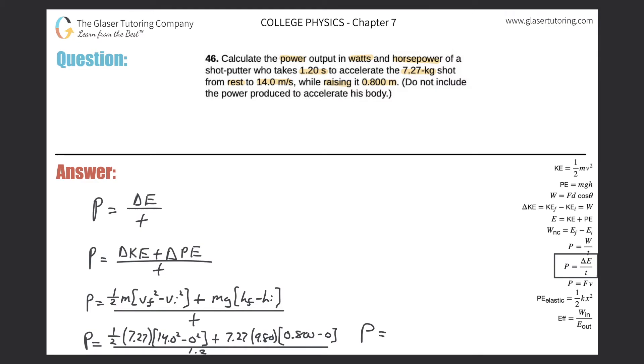0.5 times 7.27 times 14 squared plus 7.27 times 9.8 times 0.8, all divided by 1.2. So we've got 641 watts. That's the power, easy enough.